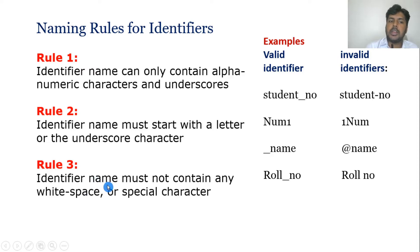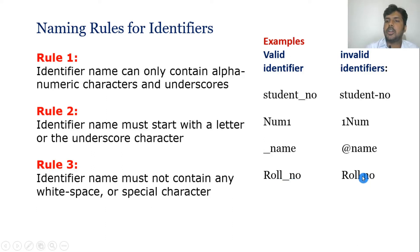Rule three: the identifier must not contain any white space or special character. For example, 'role_number' using an underscore is accepted. But if you give a space or any special character like a dollar sign, it is not accepted. On the left side you can see valid identifiers, and on the right side are the invalid identifiers.